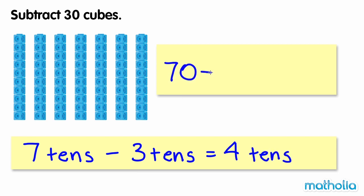So 70 minus 30 equals 40. We can cross out 3 lots of 10 cubes and count the remaining cubes to check our answer.